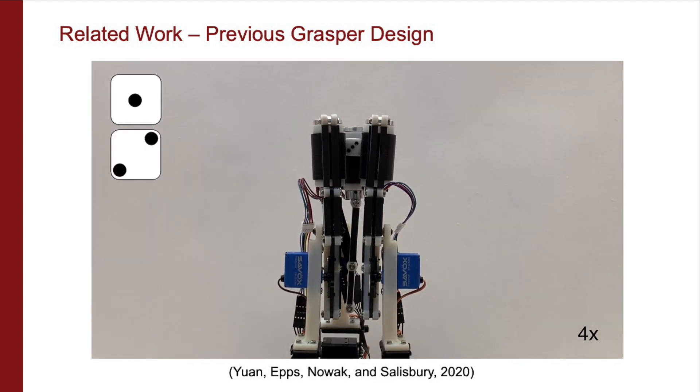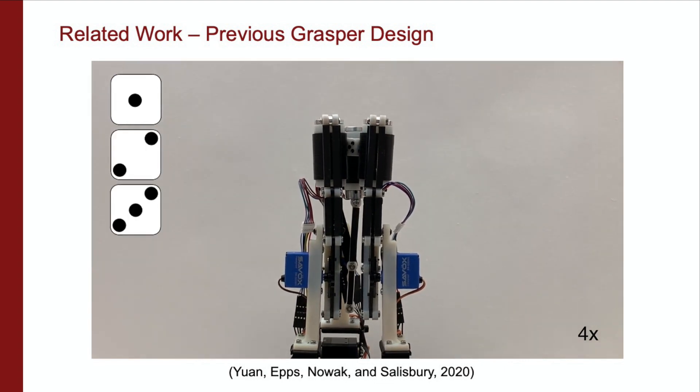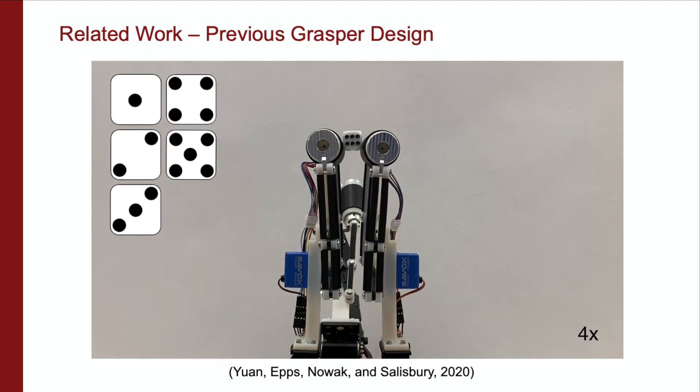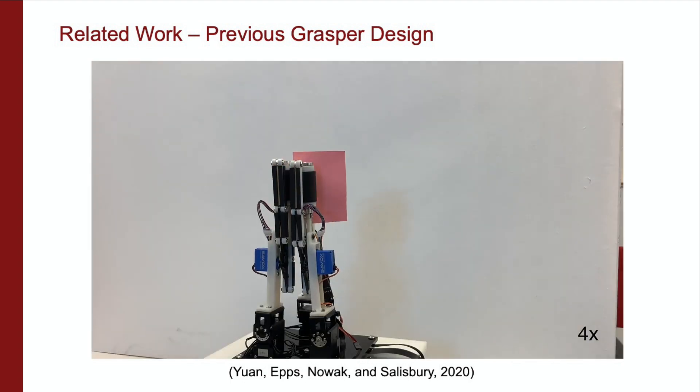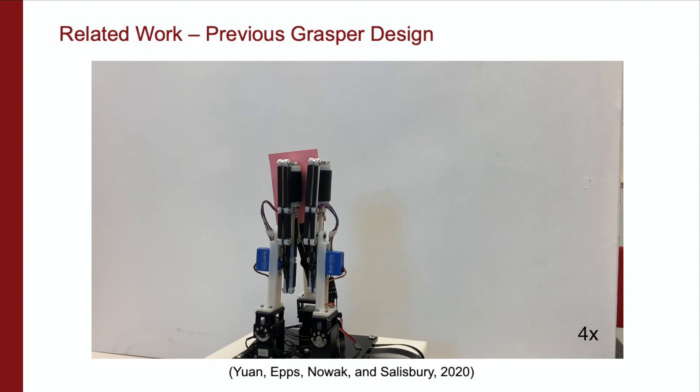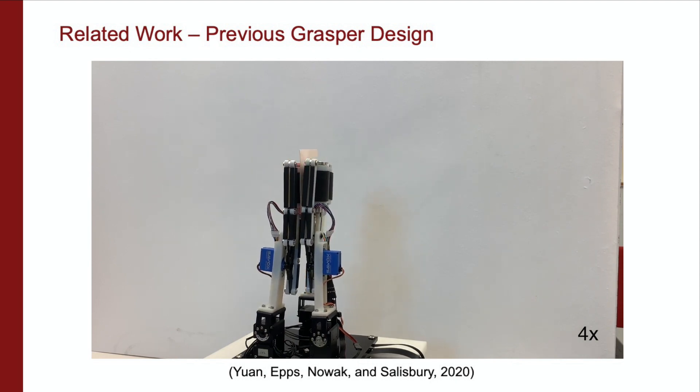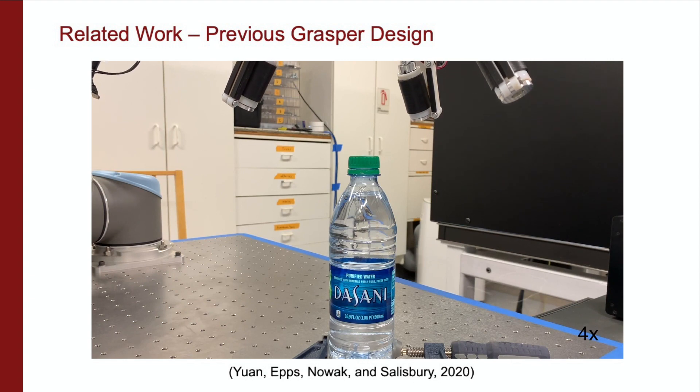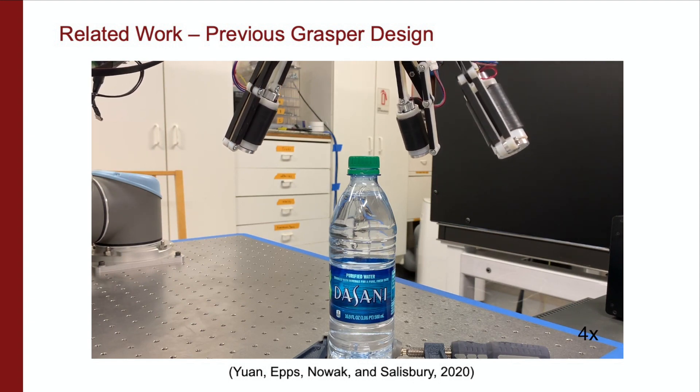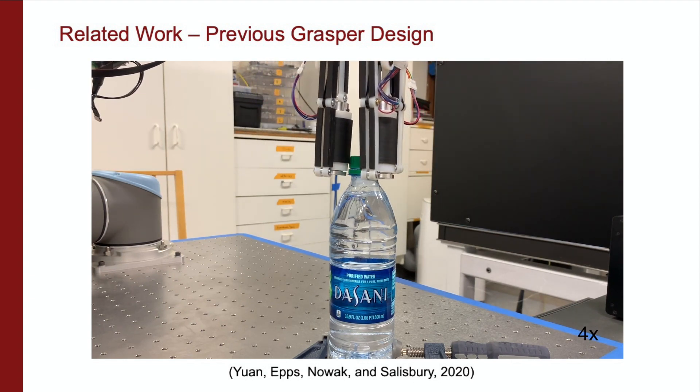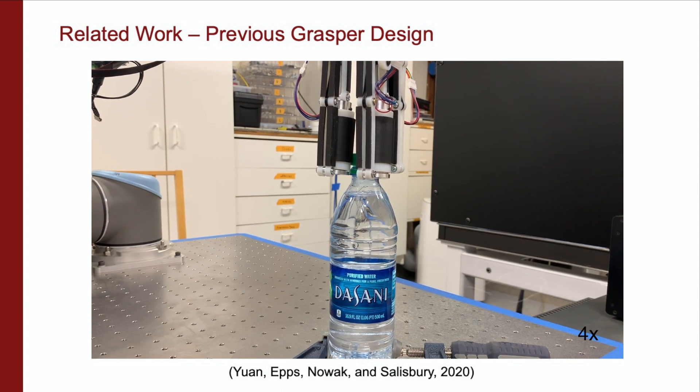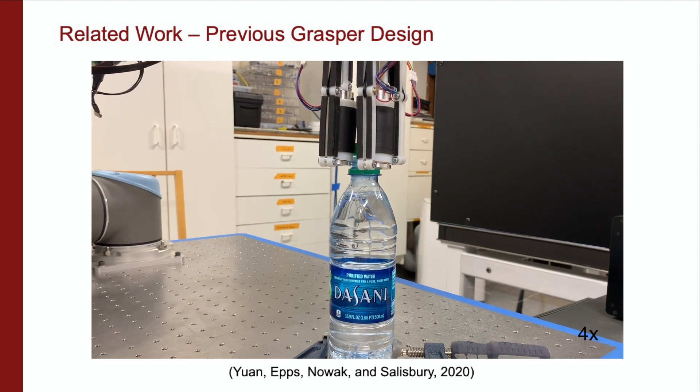One limitation of the previous roller grasper is the grasp stability. Due to the cylindrical design of the fingertips, several grasping configurations are unstable, resulting in undetermined manipulation behaviors. The redundant combinations of grasping configurations also complicates the control scheme, as the configuration used is dependent on specific manipulation tasks and the object being manipulated.